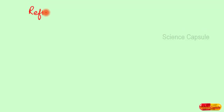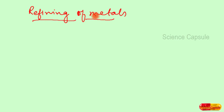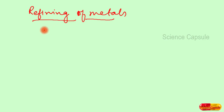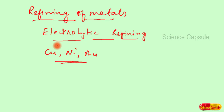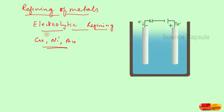Let us understand the refining of metals. From the various reduction processes, metal ores are reduced to metals, but they may contain impurities. Those impurities need to be refined to get ultra-pure metal. The most widely used method for refining impure metals is electrolytic refining, by which metals such as copper, nickel, and gold are refined.